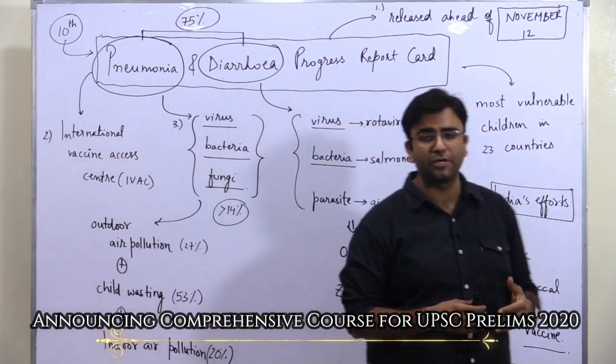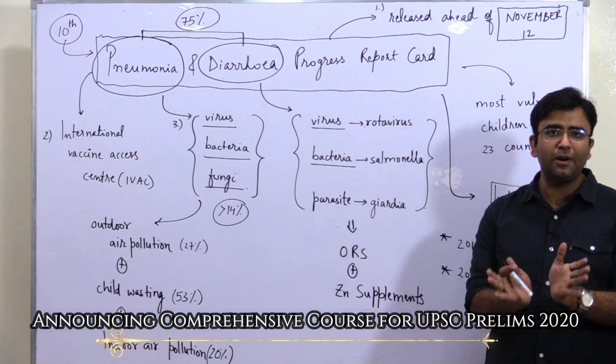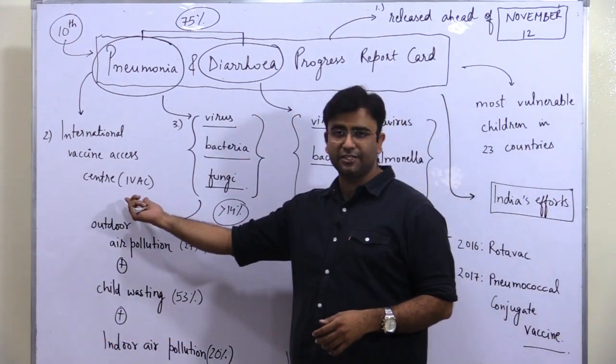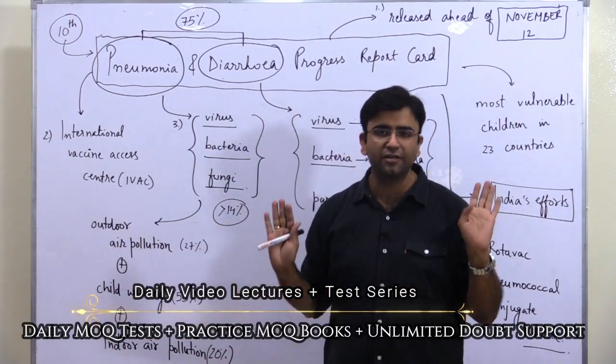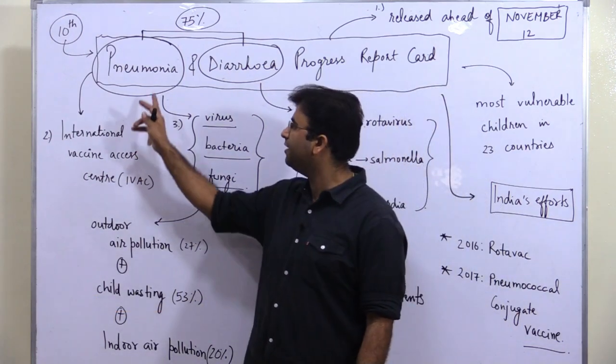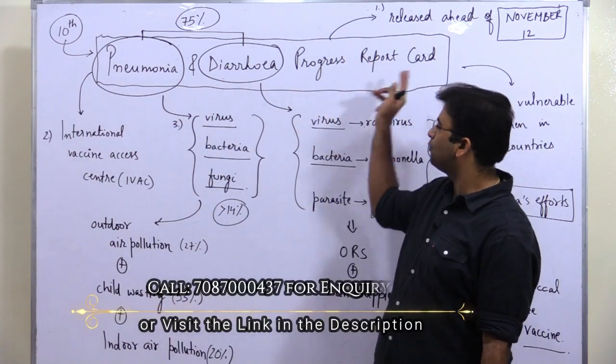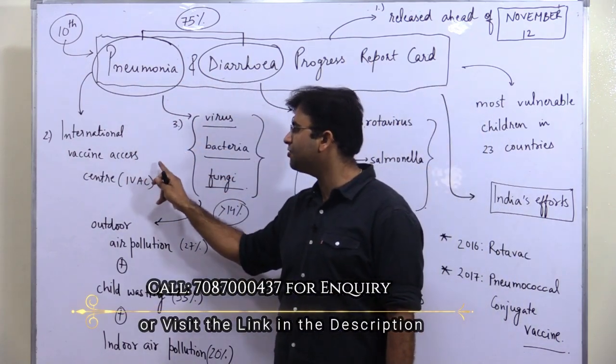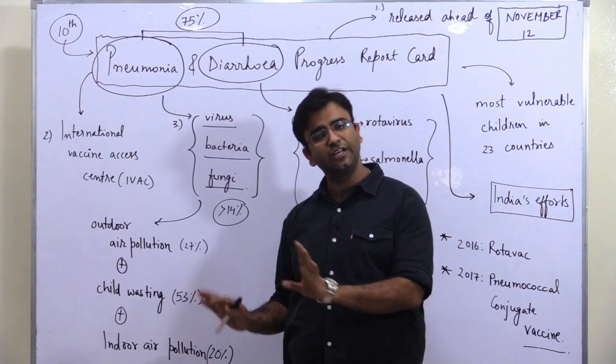It's affiliated with Johns Hopkins Health Center in Baltimore. You don't need to remember all these details for UPSC, but if you want to note something, remember that the Pneumonia and Diarrhea Progress Report Card has been published by International Vaccine Access Center in the United States.